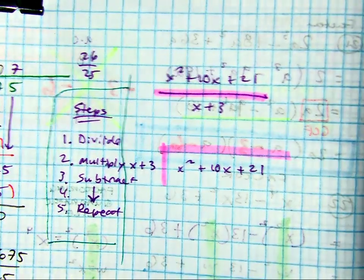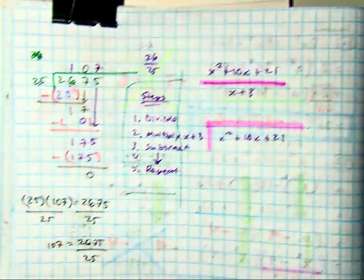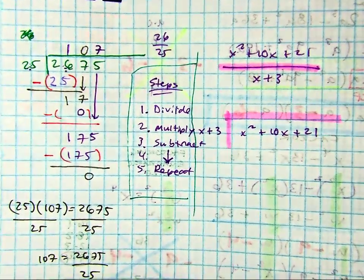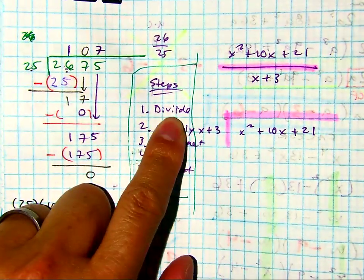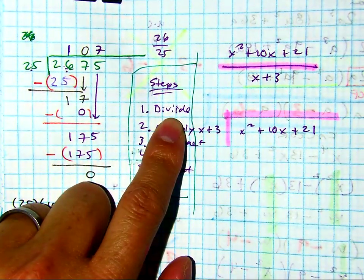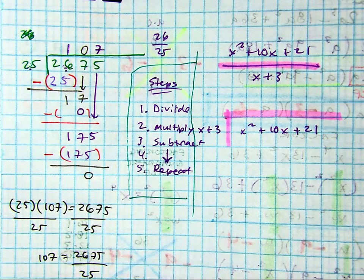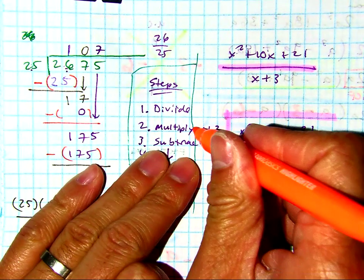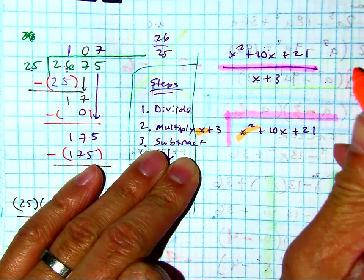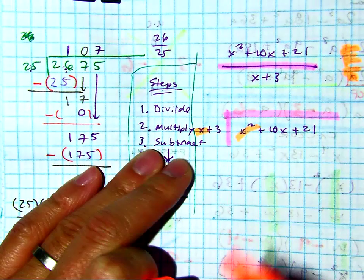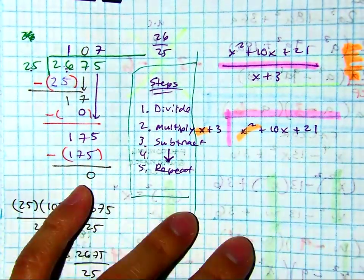And we did have these steps, and we just did one more problem on regular division. So class, what's the first thing we're going to do? We're going to divide. Now what do you divide? You divide x into x squared. So I'm going to do a side problem. This is a great way of starting the problem.